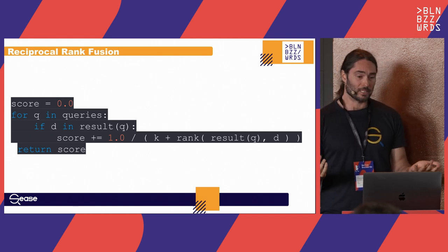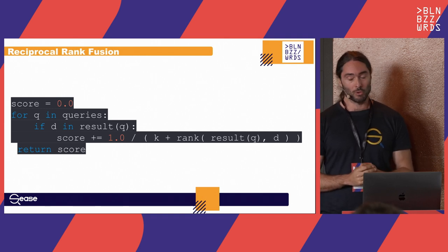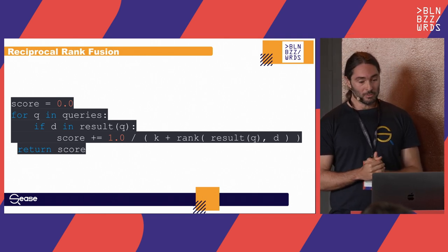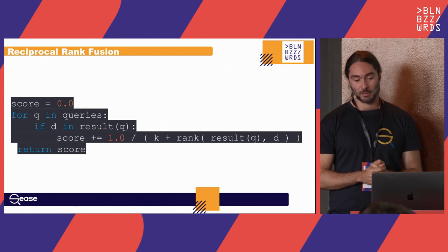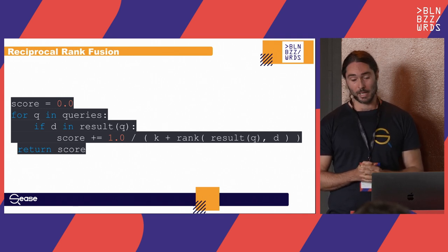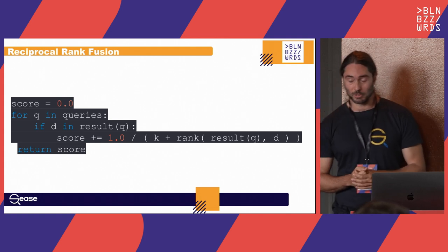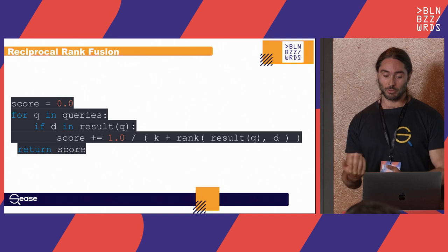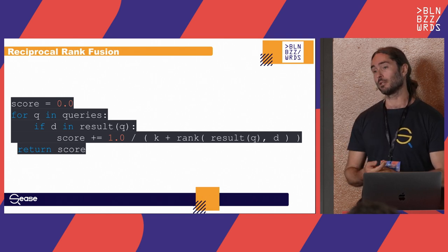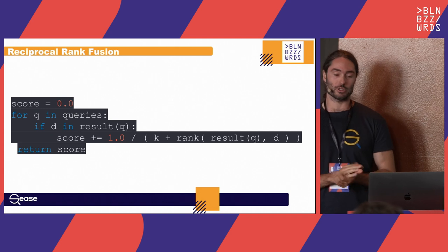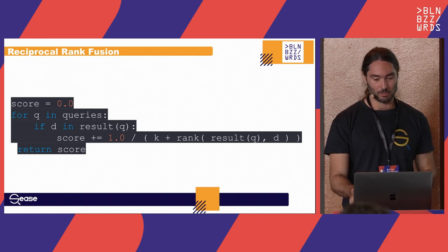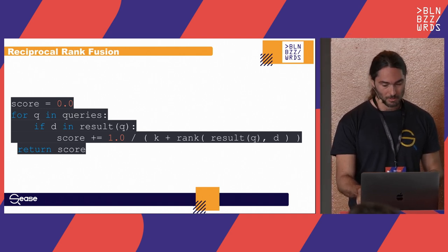This is the algorithm: you iterate over the queries, and for each document in the result set you increment the score of that document depending on a constant k and the rank of the document in the result set of query q. You iterate over the queries, iterate over each result, and increase the score. If a document appears in multiple ranked lists, it's more likely to appear in a higher position in the final result set. You only care about the position — not directly combining the raw scores.